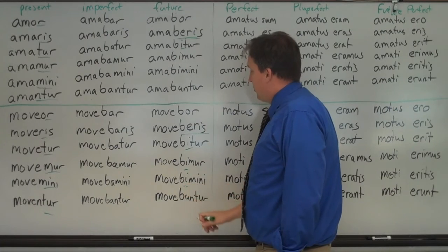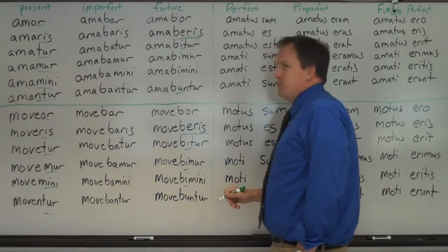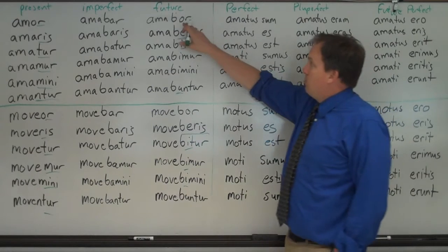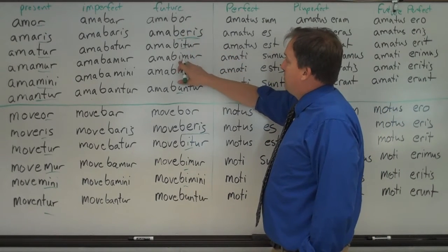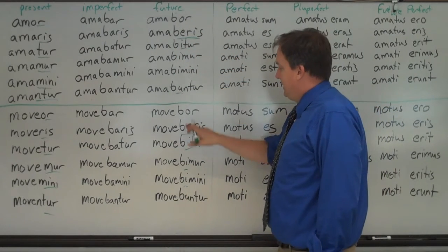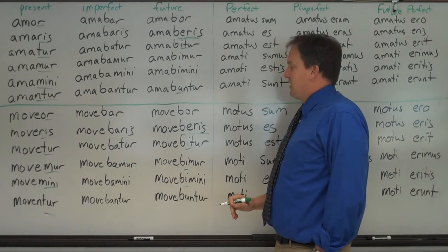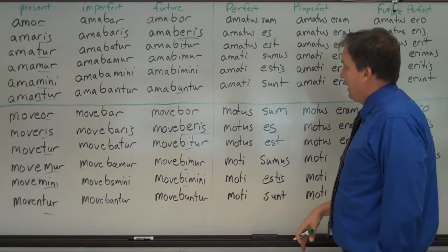So it's amabor, amaborus, but then the I comes back. Please make sure. And then the last one is like bovis bit: bimus, bitis, but. So it goes bor, baris, bitur, bimur, bibini, buntur. And for the second conjugation as well. First and second.